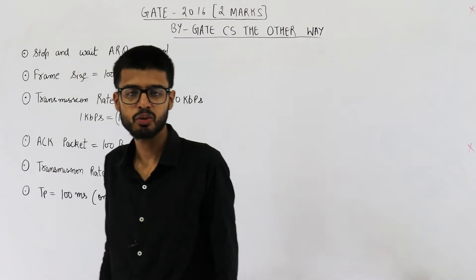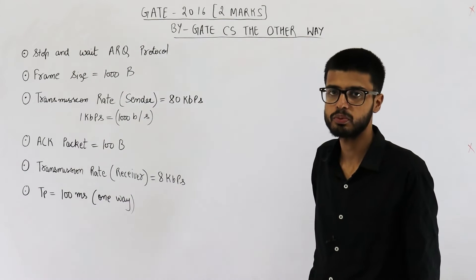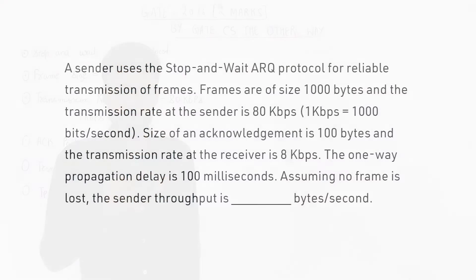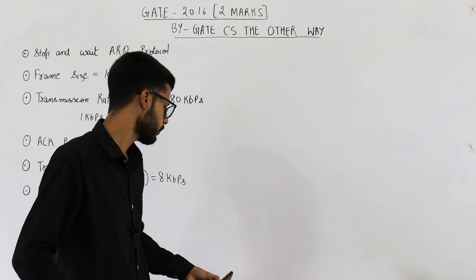Hello students, welcome back. This question is from the GATE 2016 exam. It's for two marks and the topic is stop-and-wait automatic repeat request protocol. Let's first read the statement then I'll explain it. A sender uses the stop-and-wait ARQ protocol for reliable transmission of frames. We need to determine the throughput at the sender side.